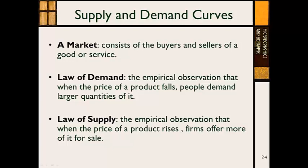Conversely, if the price rises, people demand less quantities of it. The law of supply is also generally what's observed to be true — the empirical observation that when the price of a product rises, all else equal, firms offer more of it for sale. And conversely, when the price decreases, suppliers are willing to supply less of it, so the quantity supplied will decrease.